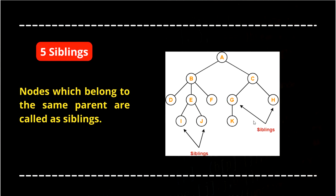Siblings: nodes which belong to the same parent are called siblings. B and C are siblings because they have the same parent A. D, E, and F are siblings because they have a common parent B. G and H are also siblings because they have a common parent C. We cannot call K and H siblings because their respective parent nodes are different. I and J are siblings because they have a common parent E.